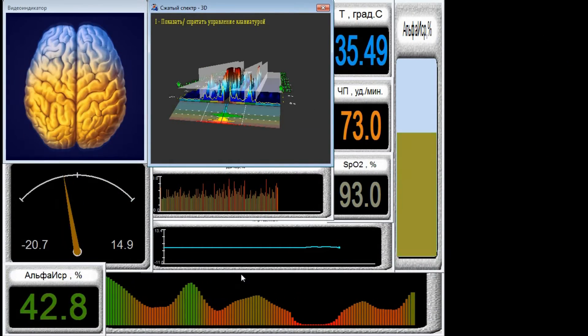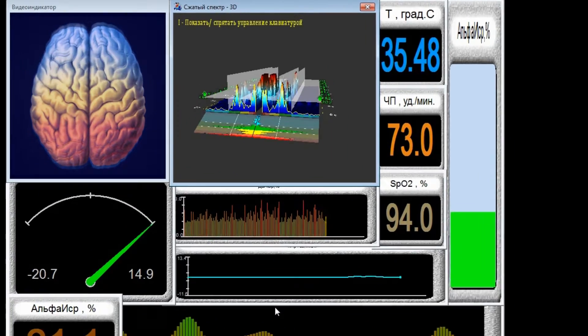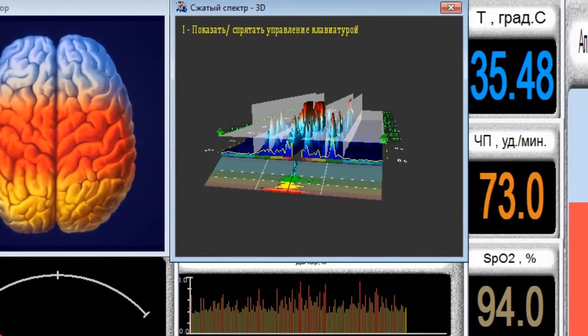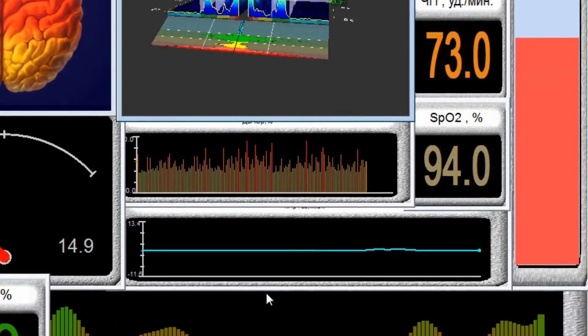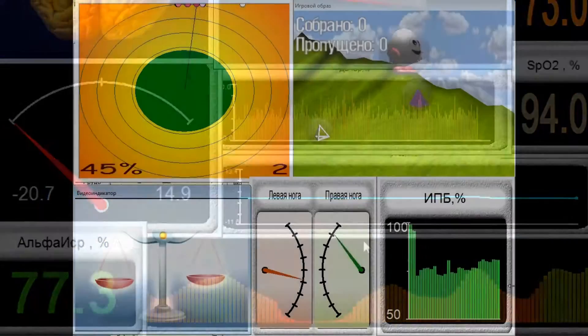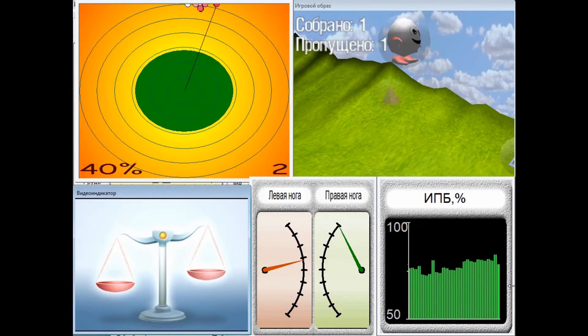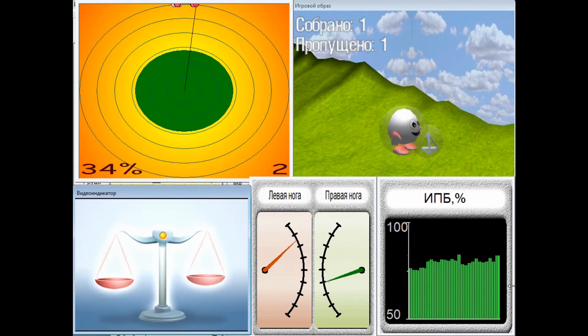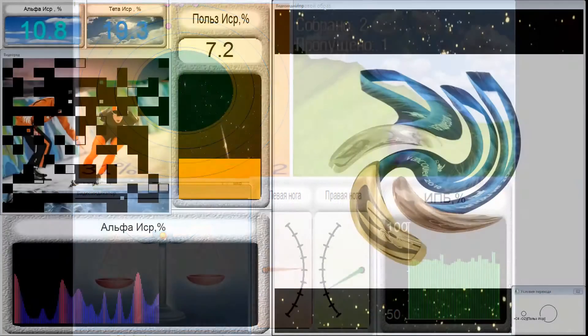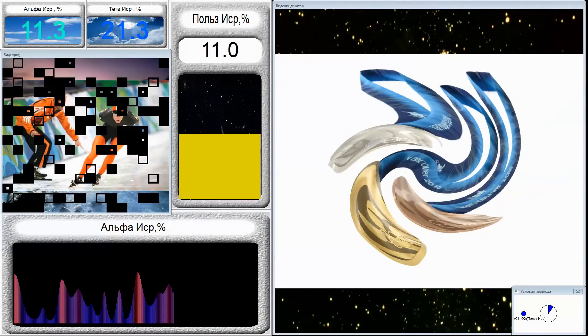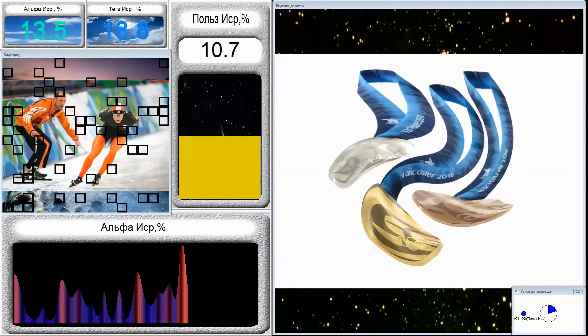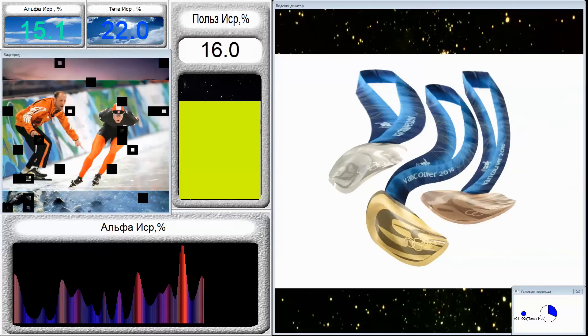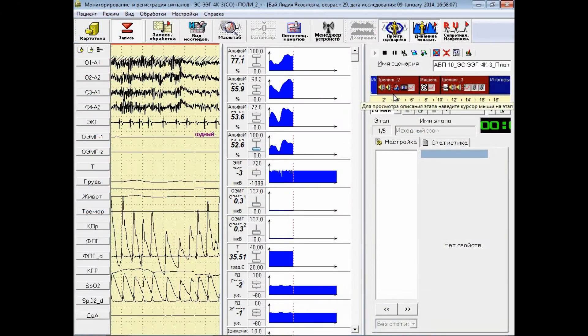The main features of wireless electroencephalograph modification mini are multi-parameter registration of indicators that allows you to create and use effective scenarios of neurofeedback procedures in professional medicine for employees engaged in stress professions such as emergency management and railway services. It can be used for rehabilitation centers, in sports, and at educational institutions.